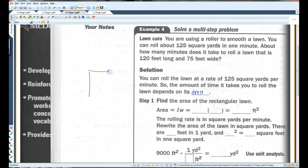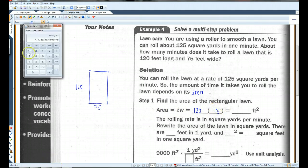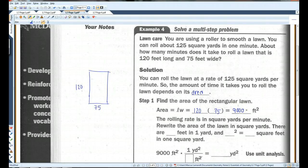I'll draw a picture. Here, we're given that it's 120 feet long and 75 feet wide. So, length times width is going to be 120 times 75. Pull out the calculator again. So, about 9,000 square feet. The rolling rate is in square yards per minute. So, I'm going to rewrite the area of the lawn in square yards.